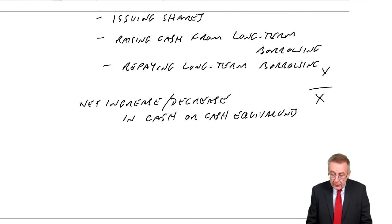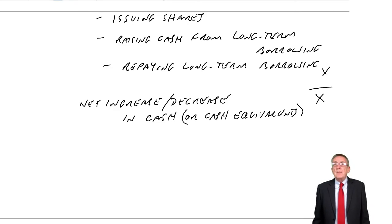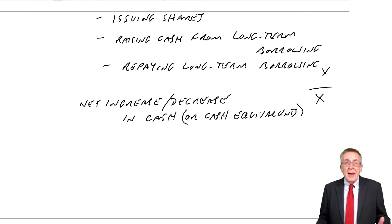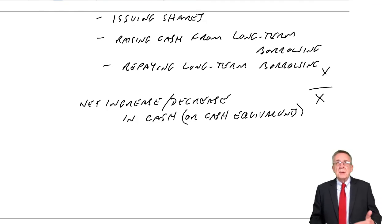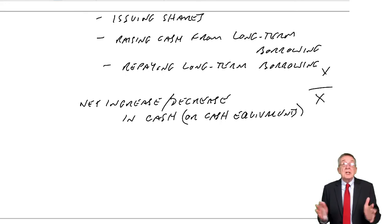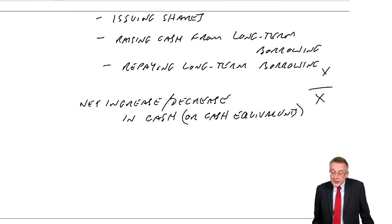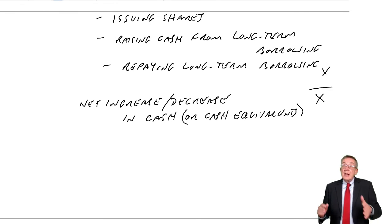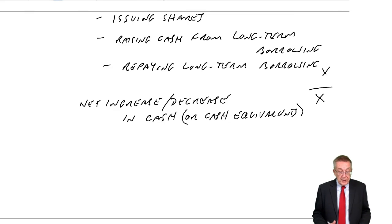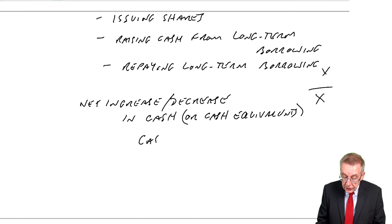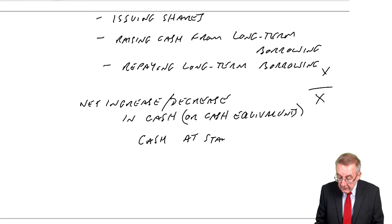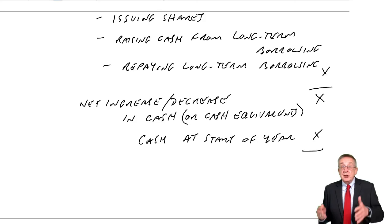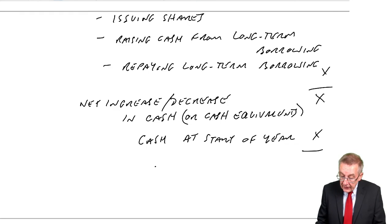Cash equivalents — we're not really worried about for the exam. But it means short-term investments. A company may have 50,000 in the bank, but rather than leave it all in the bank, they may use a bit of it to buy some shares in other companies just for the short term — we call those cash equivalents. For the exam, that's not really too relevant. We get the increase or decrease in cash over the year, and that should explain the change in the bank balances over the year. So you've got your cash brought forward at the start of the year, you adjust it by the cash you received or paid during the year, and that will give us the cash at the end of the year.